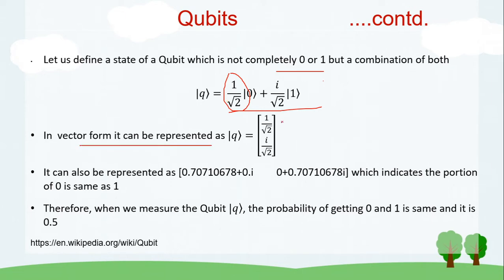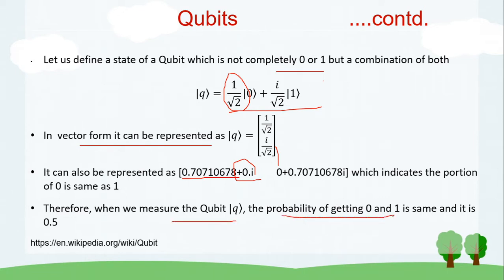In vector form a qubit can be represented as a column vector with entries 1/√2 and i/√2, and it can also be written as a row vector. The coefficients are generally complex numbers. In one example the zero-state coefficient has no imaginary part, while the one-state coefficient has only an imaginary part. Interestingly, when both magnitudes are equal, the probability of measuring zero and one are the same — each 0.5.